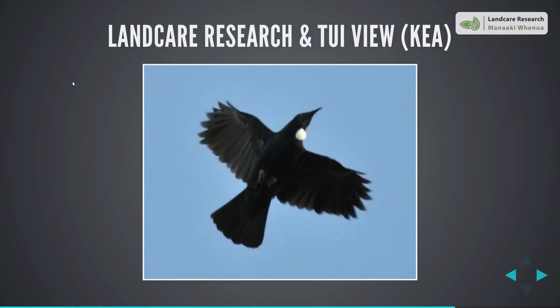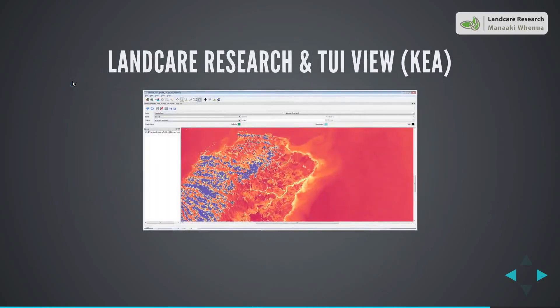That leads me to the TUI View application, also sponsored by Landcare Research. It is free and open source. You can download it for Windows and Linux, and you might be able to get it working on Mac as well. You can even view files remotely. This is an example of the TUI View application — I've loaded a raster image here which is a Kea file. You can do coloring and all sorts of stuff. I'm by no means a specialist on using desktop GIS, but this tool was very easy for me to pick up.